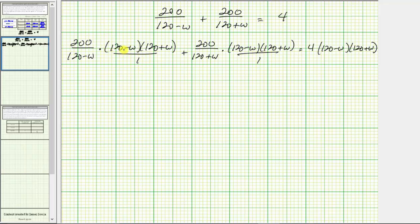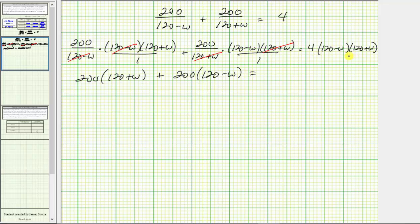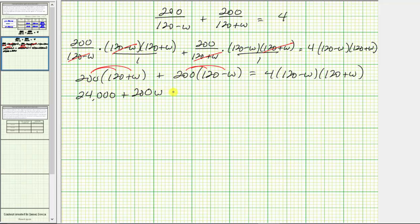For the first product, 120 minus W divided by 120 minus W equals one, so the product simplifies to 200 times the quantity 120 plus W. Then, 120 plus W divided by 120 plus W is also one, giving us the product 200 times the quantity 120 minus W. We then distribute 200: 200 times 120 equals 24,000, plus 200W, plus 24,000, minus 200W.